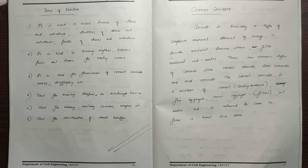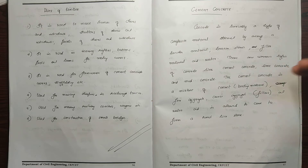You use fine material and water along with a binder material and coarse aggregate as filler material. All of these are mixed together to form concrete, which is a composite material.